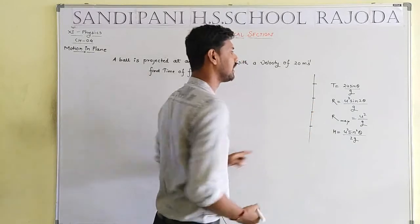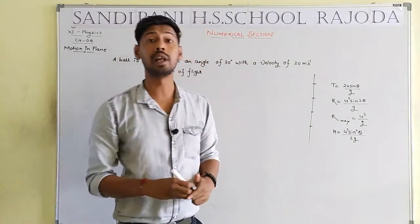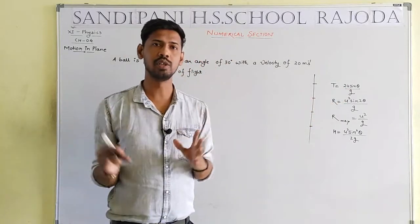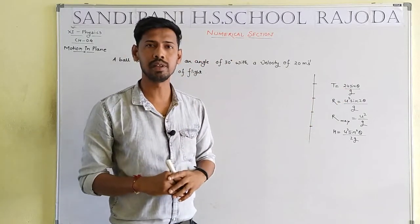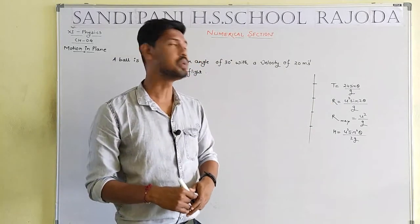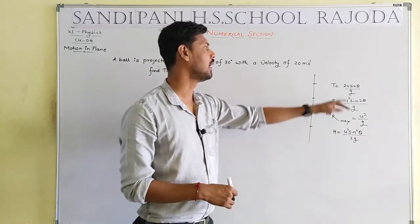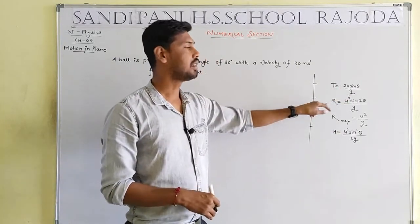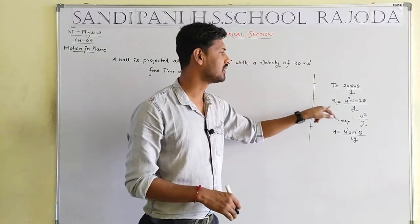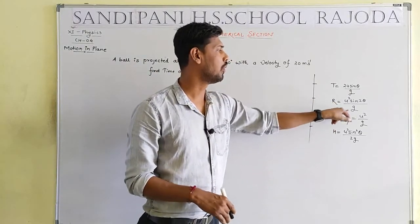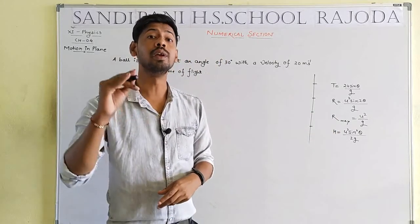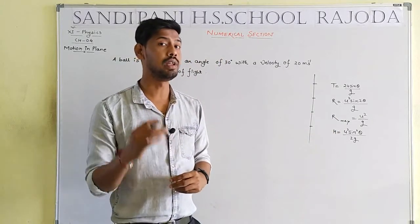Capital T represents the time of flight. By use of derivation, we have the formula: T = 2u sinθ / g. And R, the range, equals u² sin2θ / g. Maximum range occurs when θ = 45°, giving R_max = u² / g.